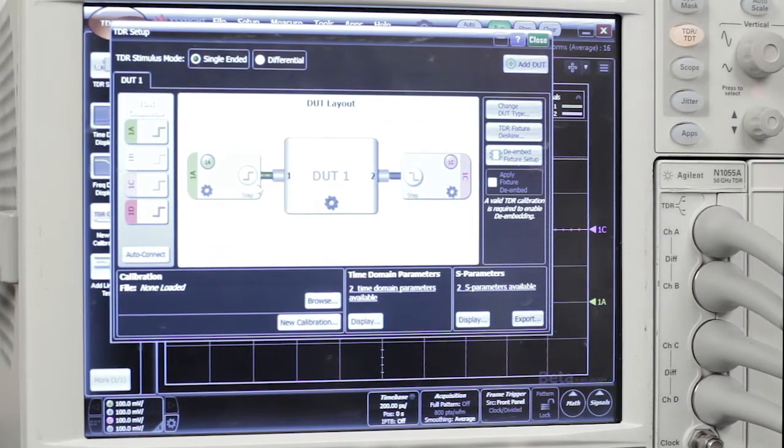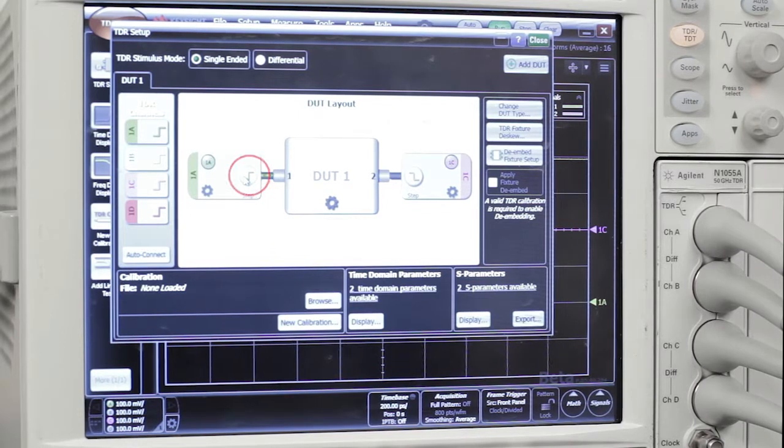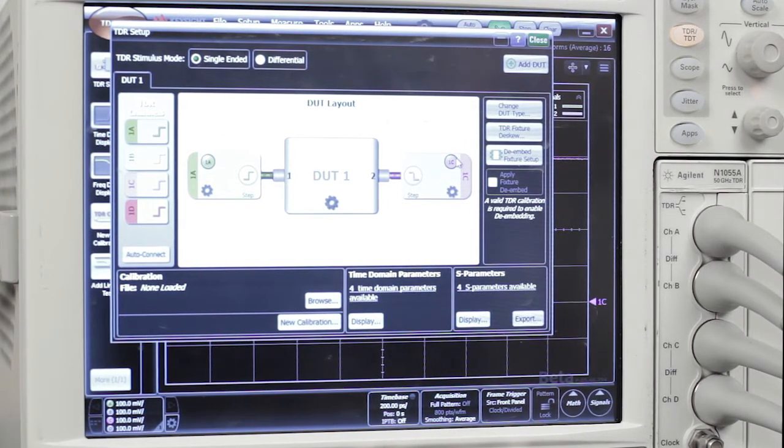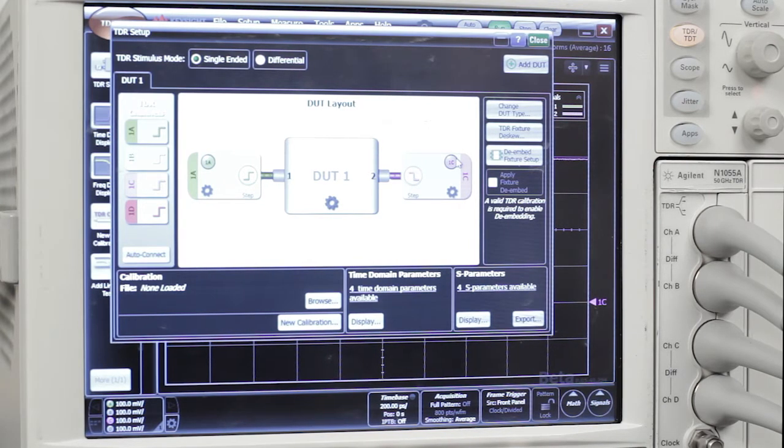At this point, you're ready to make measurements with your TDR. You can turn the steps on and off with these controls. You can turn the receivers on and off with these controls. But if you want the best accuracy and if you want to be able to use advanced features like AFR and de-embedding, you need to perform a TDR calibration.